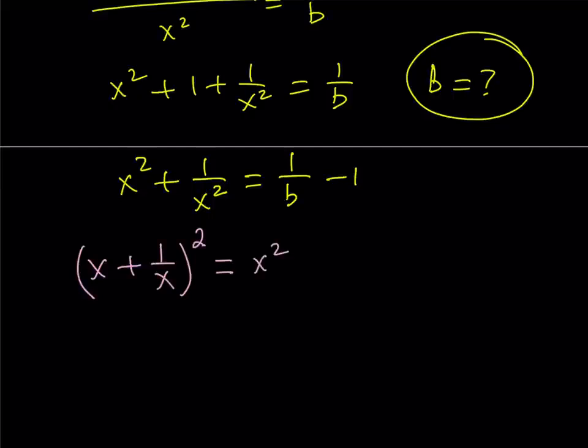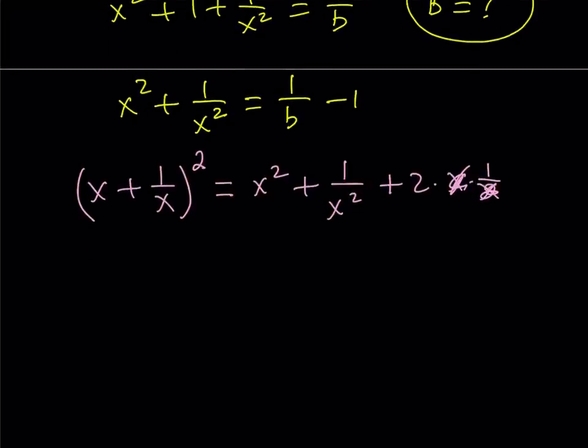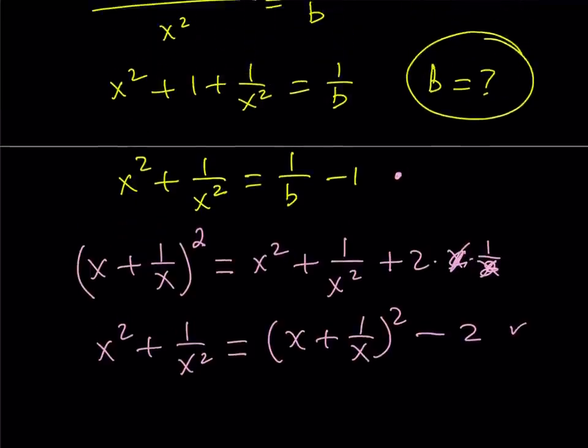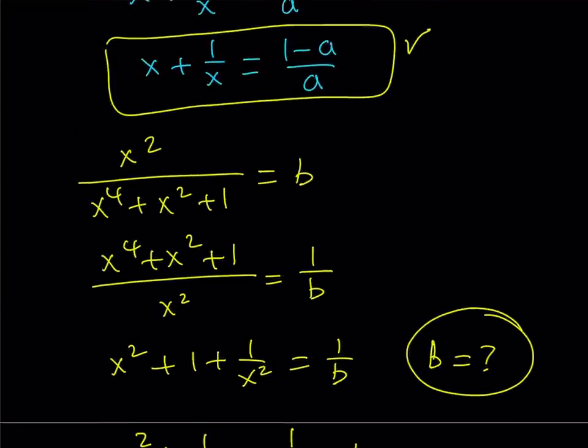It becomes x squared plus 1 over x squared plus 2ab gives you 2 times x times 1 over x. But it is just 2. So you get the following, which is pretty cool. From here, I can isolate x squared plus 1 over x squared is equal to the quantity x plus 1 over x squared minus 2. Now, remember, my goal is to solve for b and I can do it here. In order to solve for b, what happens if I evaluate x squared plus 1 over x squared? And I got it in terms of x plus 1 over x. But x plus 1 over x is equal to 1 minus a over a.